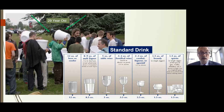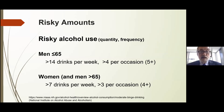One point about patients' drinking is what are they actually drinking? Risky amounts depend not only on quantity but on gender and age. For men 65 and under, more than 14 drinks per week or more than four drinks on occasion is considered risky. For women and men over 65, it's more than seven drinks a week or more than three per occasion. These are epidemiologic statements — when drinking reaches these levels, problems arise.